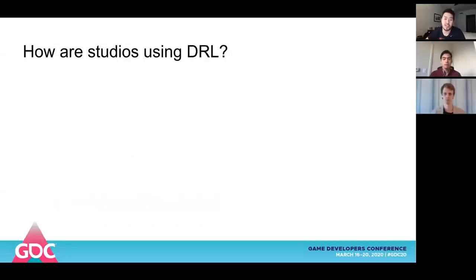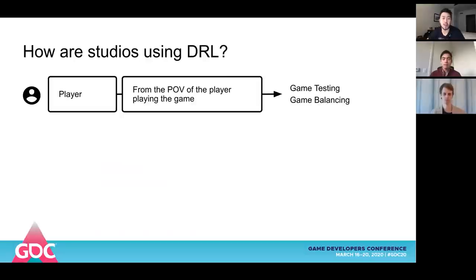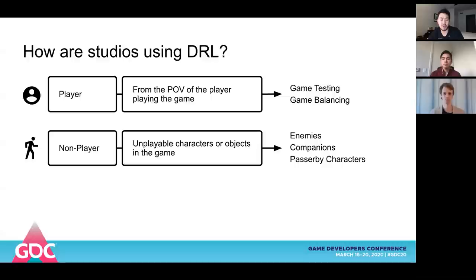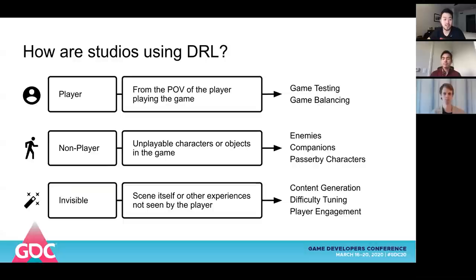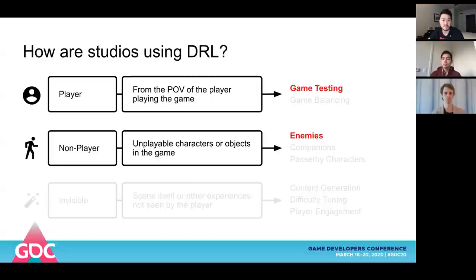So how are studios using deep reinforcement learning? The first is from the player perspective — creating some sort of player bot or virtual player, usually for game testing and game balancing. The second is from the non-player perspective: unplayable characters or objects in the game such as enemies, companions, or passerby characters. And the last one we'll call the invisible scenario — the scene itself or other experiences not seen by the player, in the area of content generation, difficulty tuning, and player engagement. Today we're going to focus predominantly on game testing and creating enemies.